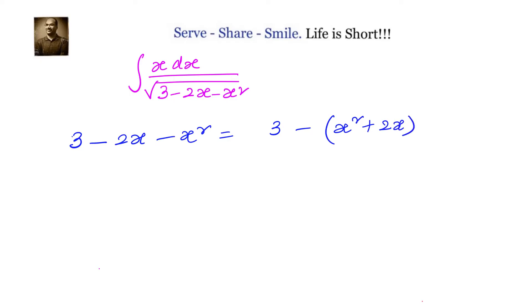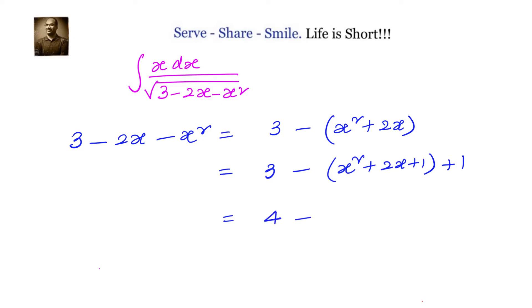Let us see whether we can do that. For that, let us separate x squared and 2x and place a minus in front of them. Then we have 3 minus of (x squared plus 2x). Completing the squares, we add 1 and subtract 1, giving us 4 minus of (x squared plus 2x plus 1), which equals 2 squared minus (x plus 1) whole squared.